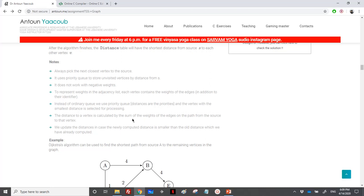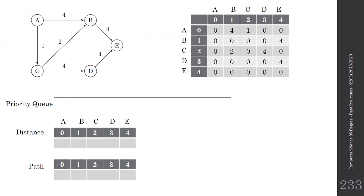Let's move to the animation. I'm using the same example and question: a graph with positive weights. This is the adjacency matrix. We'll be using a priority queue and two arrays — one for the distance and one for the path.